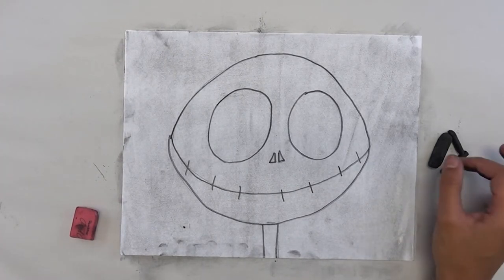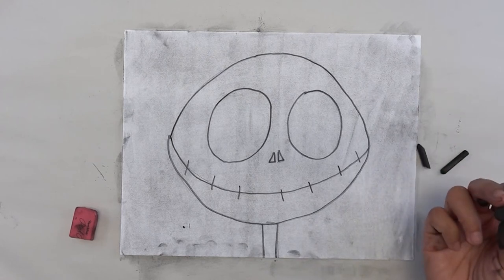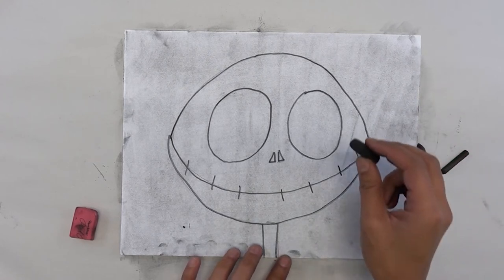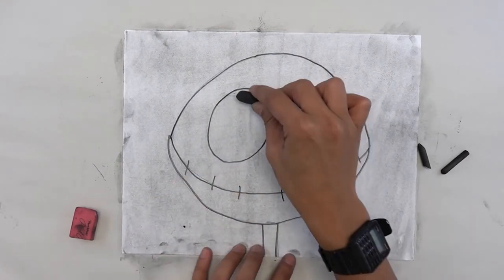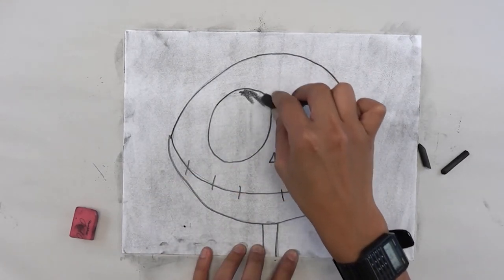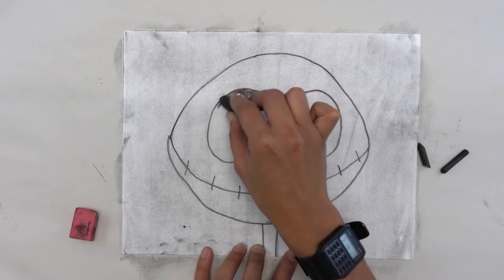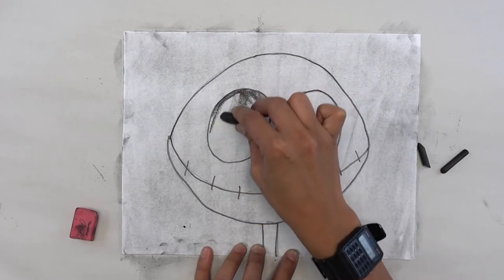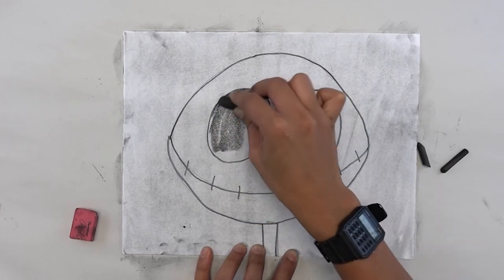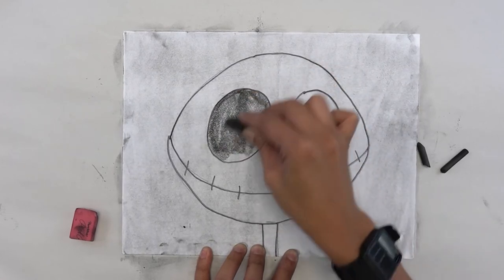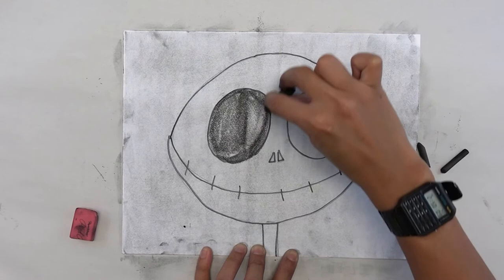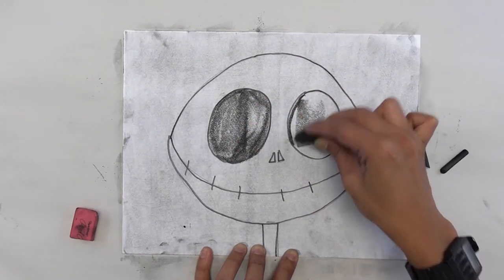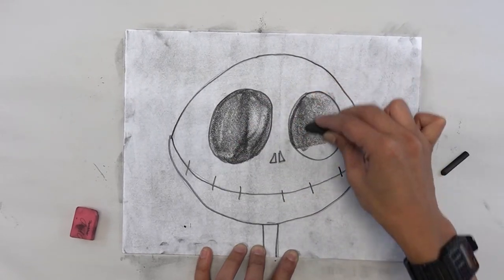Then from here, I'm going to go in with the charcoal, the compressed charcoal. This is our black and all I'm going to do is the tip here and I'm going to go ahead and kind of trace the inside of the eye. And then all of this, I'm going to go ahead and fill it in. So it's nice and dark. Just like this. Same thing here. I'm just going to fill that in.